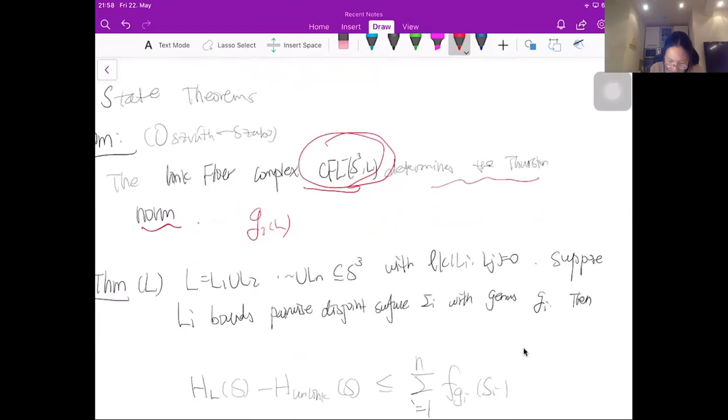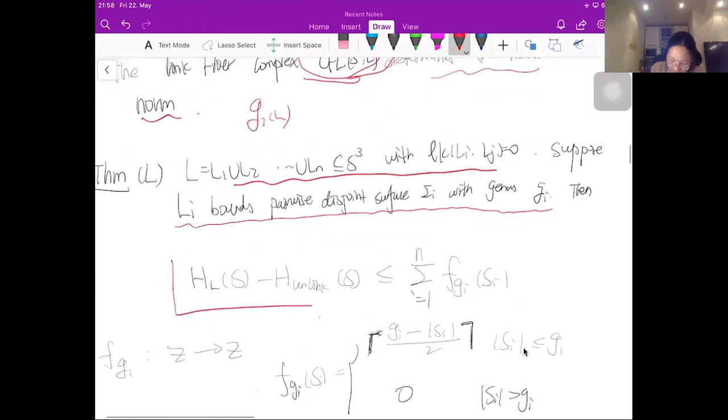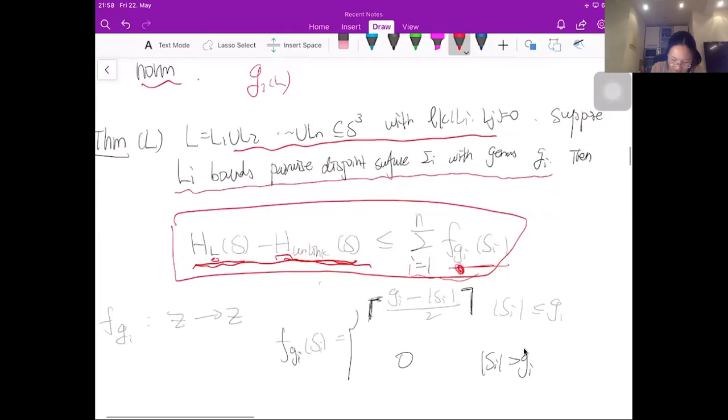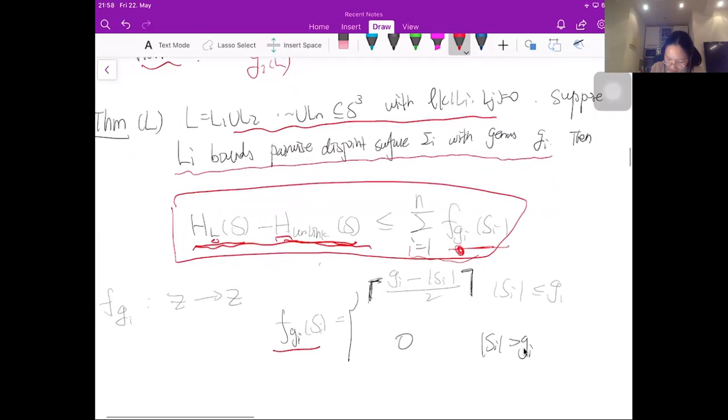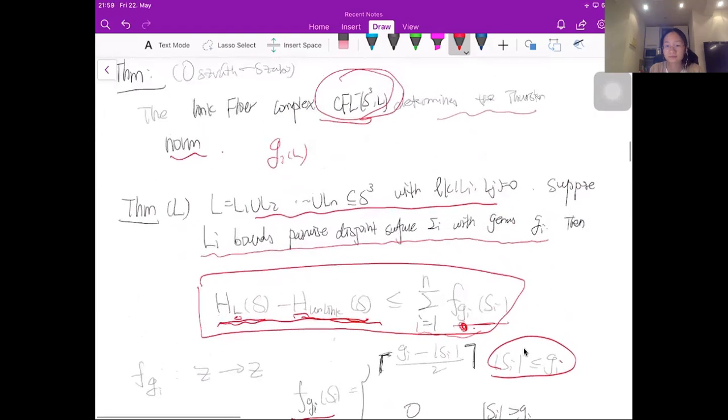This is a theorem proved by Ozsváth and Szabó saying this link Floer complex, meaning the filtered chain complex, will determine the Thurston norm. And then for this, so this gives G₃(L). And then for G₄(L), we have a theorem saying if you have a link with pairwise linking number zero, and also you suppose Lᵢ bounds pairwise disjoint surfaces Σᵢ with genus Gᵢ, then we have these following inequalities which give you a bound of this genus in terms of the ε function. So you can see the left hand side is the ε function of the link. So this is the ε function of the unlink. So this is really a constant. And the right hand side is a function involving the genus Gᵢ. So this function F(Gᵢ, Sᵢ) is defined as follows: F(Gᵢ, Sᵢ) is defined as the ceiling of (Gᵢ minus Sᵢ) over two if Sᵢ is smaller or equals to Gᵢ. Otherwise, it equals to zero. So the right hand side really just involves the genus of the surface.